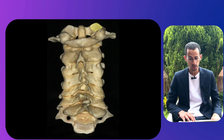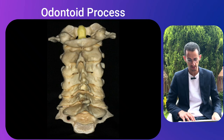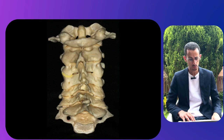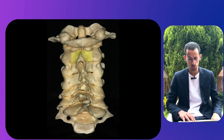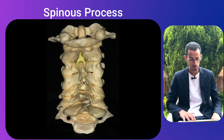The articulation between C1 and C2 is quite unique in that C2 has a superior projection known as the odontoid process, or the dens. We can also see the facet joints connecting all the spinal levels, the lamina on the posterior aspect, and the spinous processes of C2 through C7.